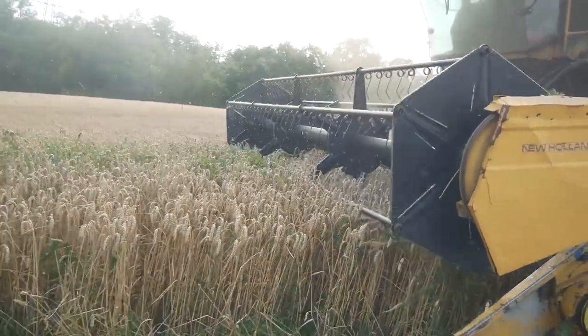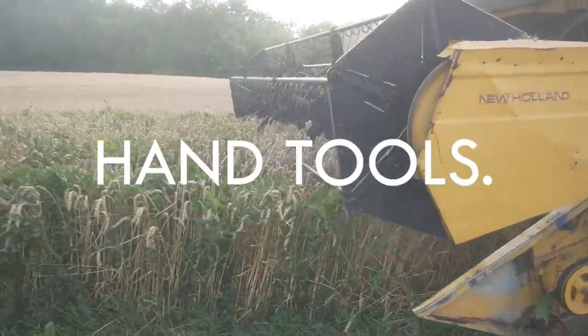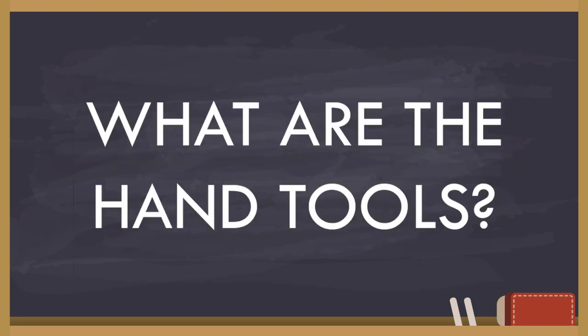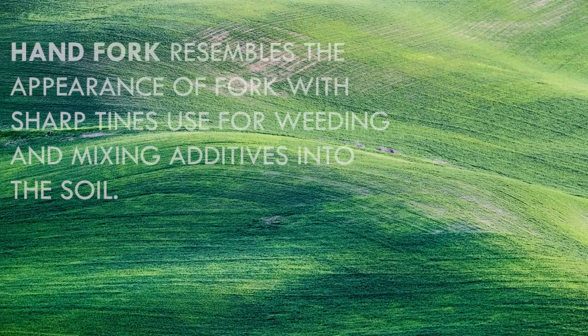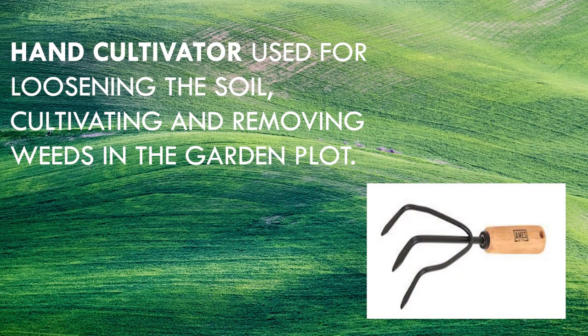Farm tools and equipment play a very important role in every farm practice and operation. Let's start with hand tools. Hand tools are the most simple and light tools. They are used with your bare hands in performing farm operations in small areas — your vegetable garden at home, or the small garden area in school. Hand fork: a small staff with sharp tines used for weeding and mixing additives into the soil. Hand cultivator: used for loosening the soil, cultivating, and removing weeds in the garden plot.